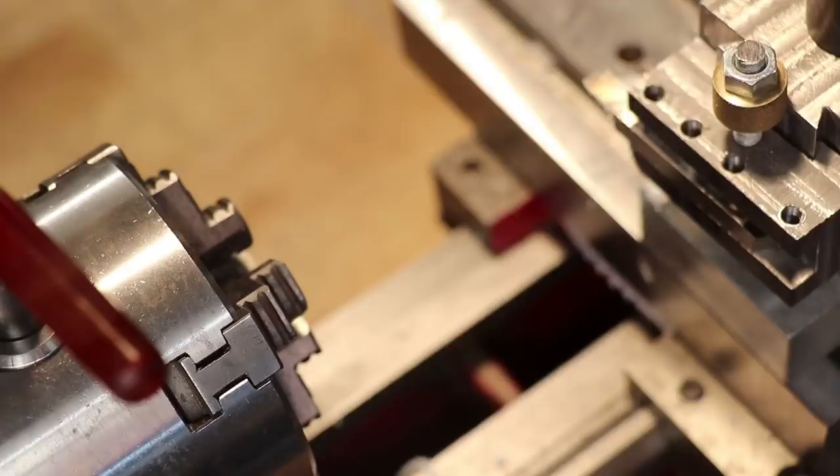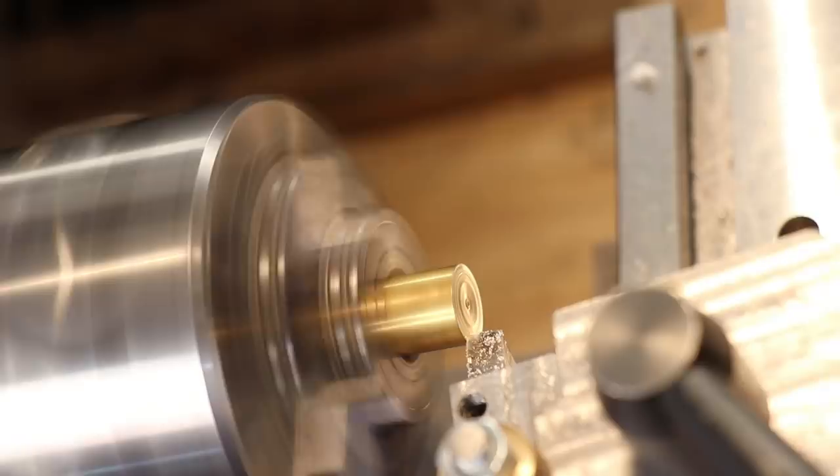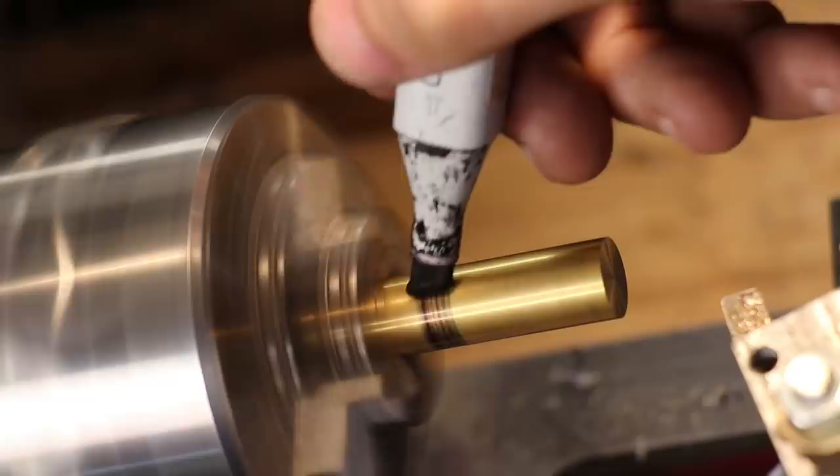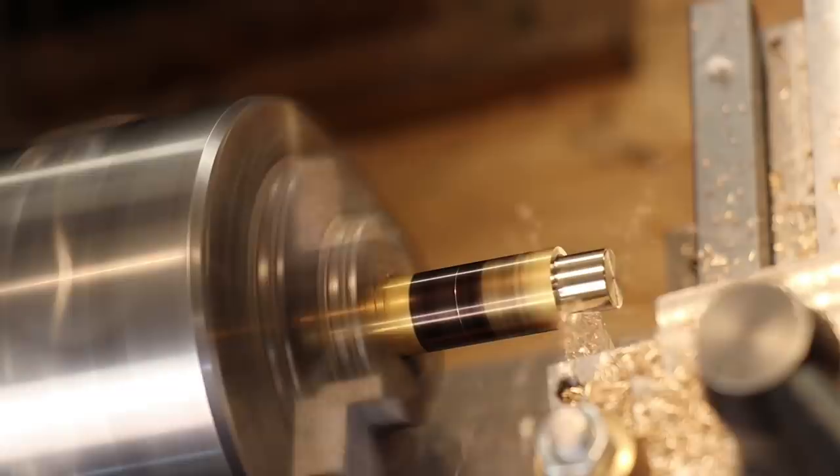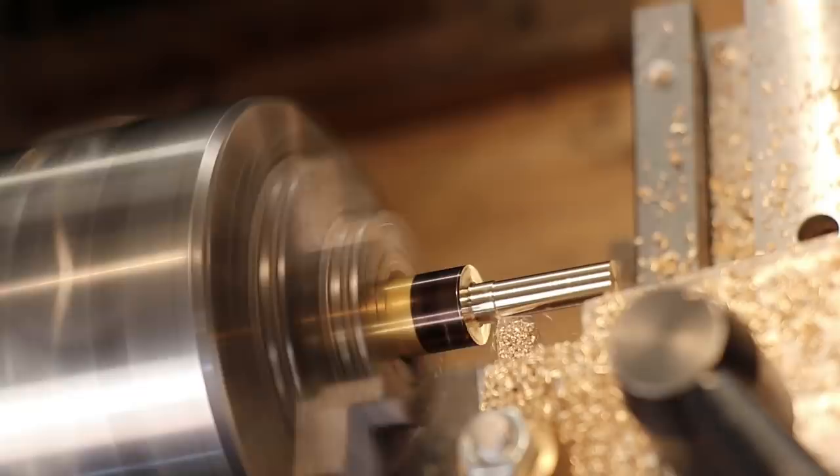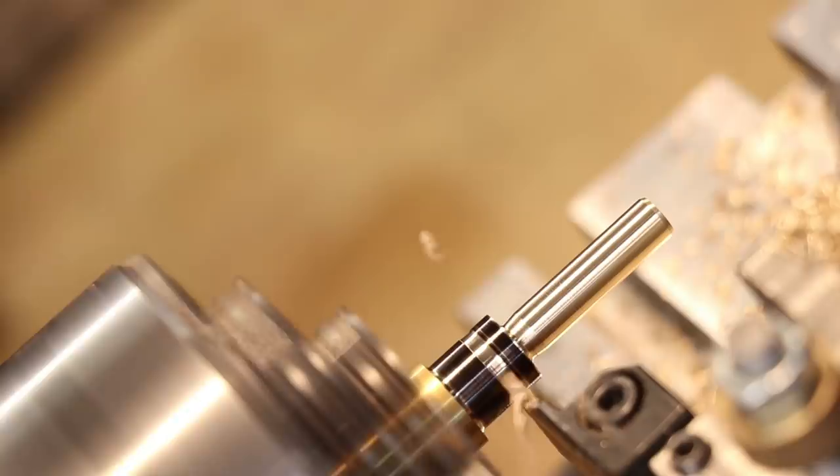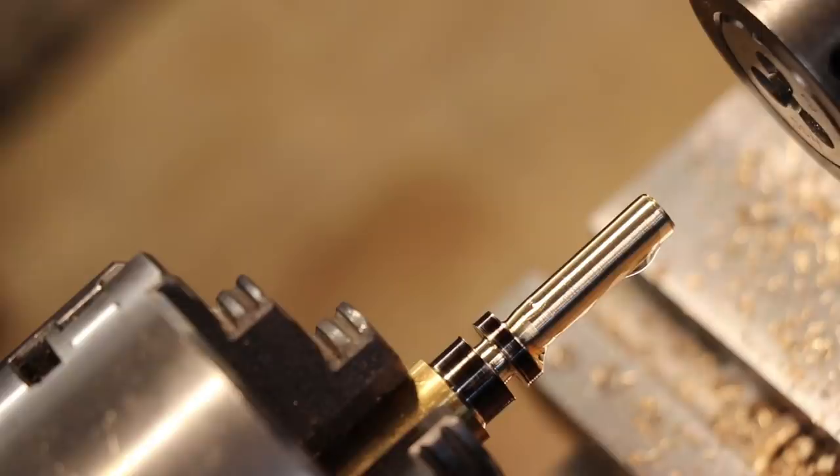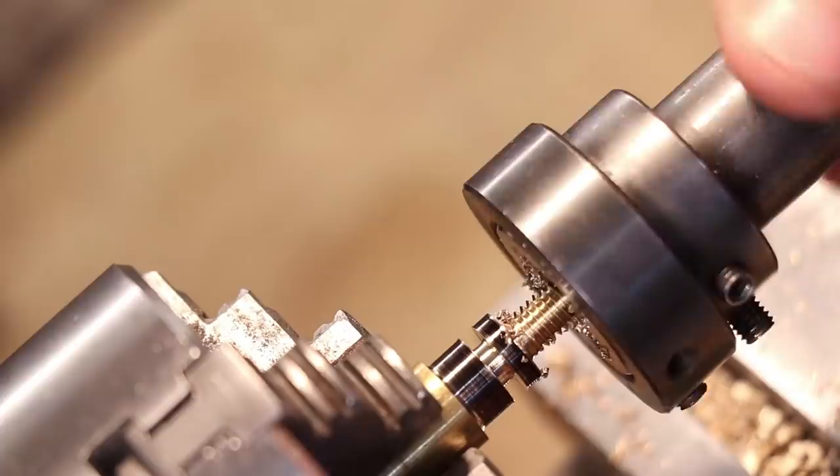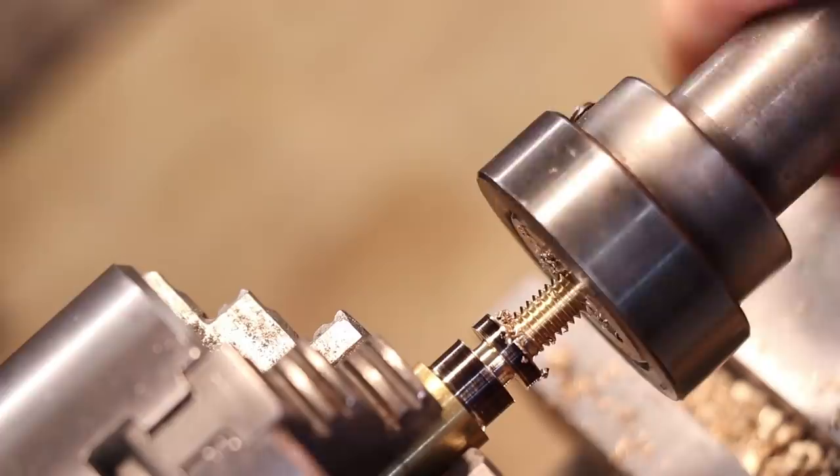Next we can move on to machining the lead screw. Ideally I'd want to use a bearing bronze of some type, but brass was all I had on hand and it should work as an interim material. Normally for a part like this you'd want to use the lathe's lead screw to cut the threads into the part, but because this is more of a proof of concept part I was happy just to use a thread die.